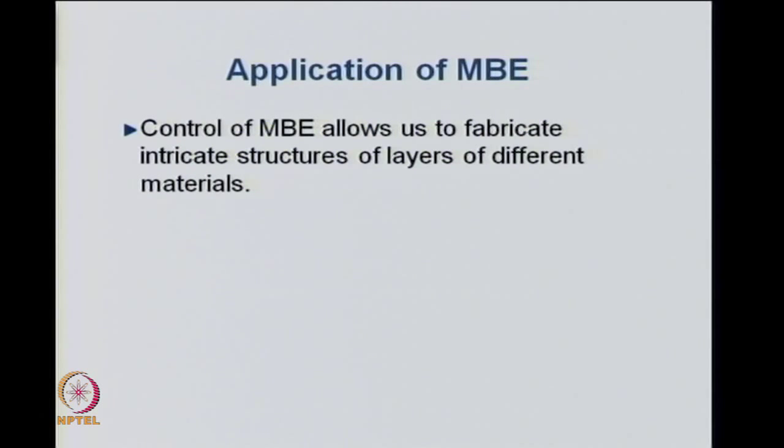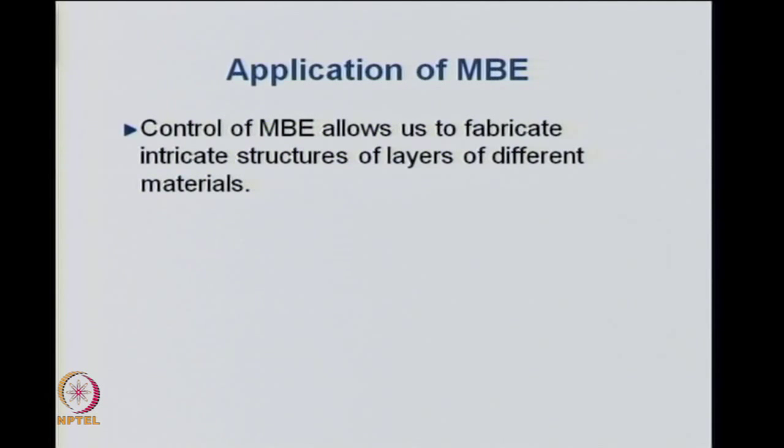The application of MBE allows fabrication of very intricate layer structures. You can precisely make multi-layer systems — for example a 10-layer or 4-layer system — with each layer having the desired composition, by properly choosing molecular beams, temperatures, and the substrate. This allows growth of highly ordered epitaxial layers of various compositions. MBE is a very important tool for growing multilayers. Thank you for this lecture; we will continue our course on nanostructured materials.